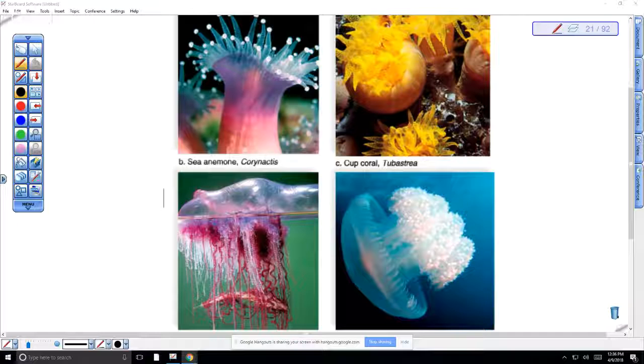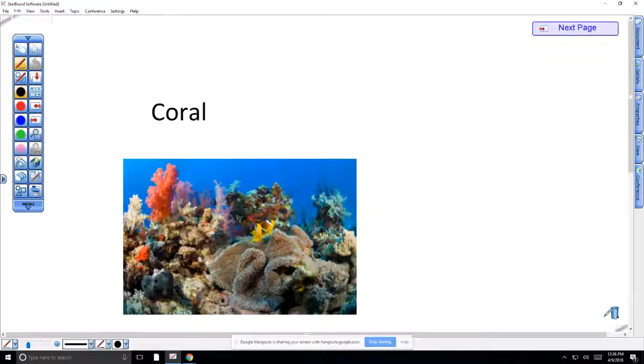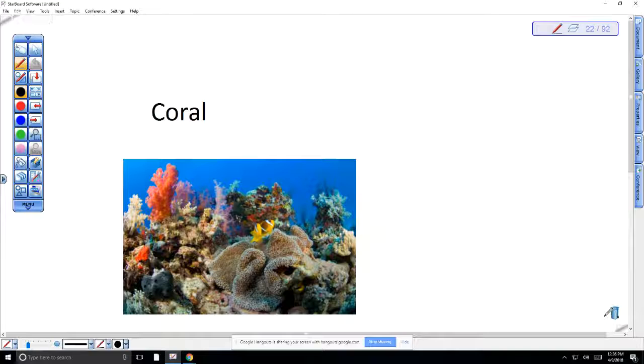When we look at Cnidarians, one really important group is referred to as the coral. These are so important because they make up the coral reef ecosystem, which is essentially the rainforest of the ocean. Even though it makes up only 2% of the ocean floor, it is super important and super diverse. They estimate that about 25% of all marine species depend in some way on coral reef ecosystems in order to survive, for shelter and for food.